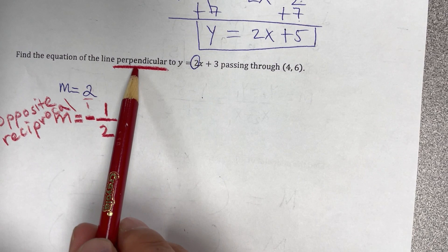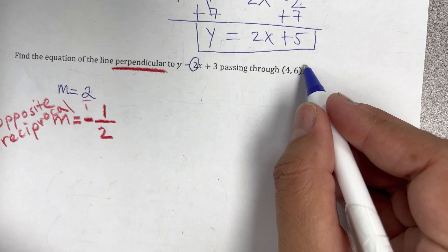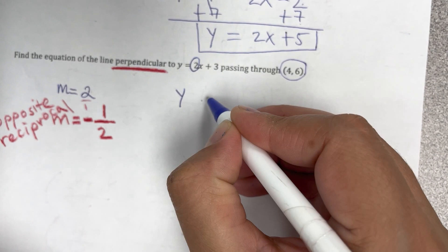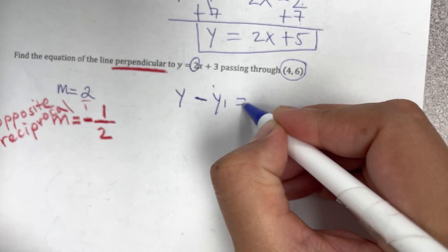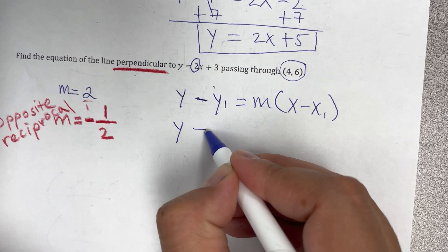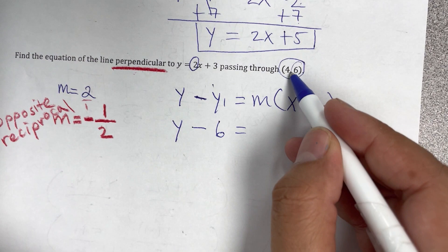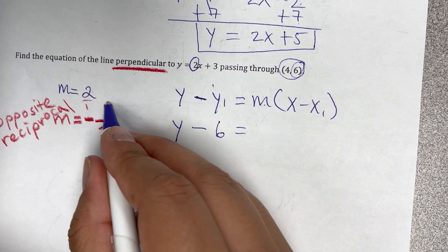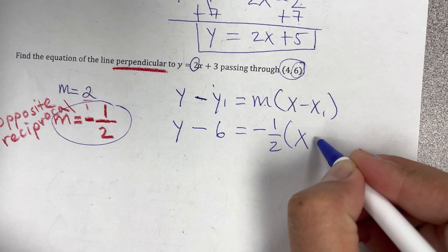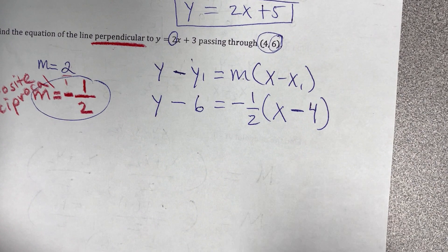Now that we have the slope and we have our point, we can use again the general formula for the point slope. So it's y minus y1 equals m times x minus x1. It's going to be y minus the value of y, which is 6. Cuidado, no me escojan el equivocado. No me vayan a usar el 4 en este caso. M es el nuevo que vamos a utilizar. The negative 1 half times x minus 4, which is the value of the x.